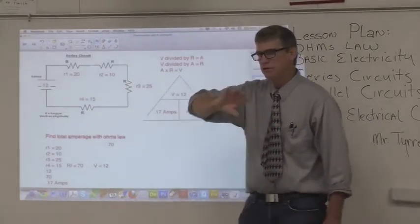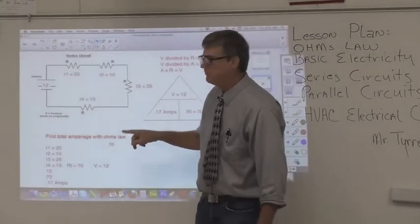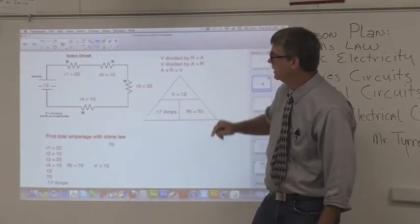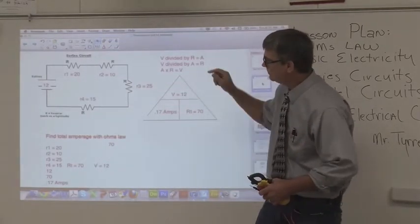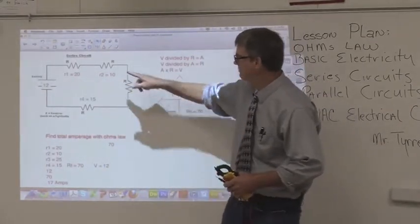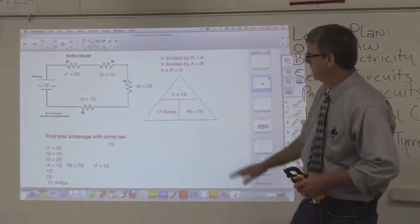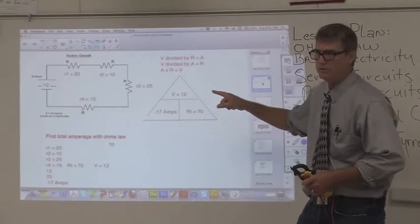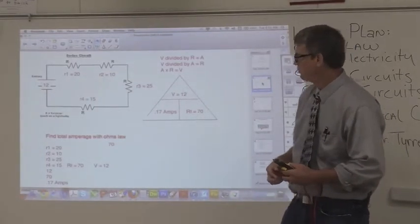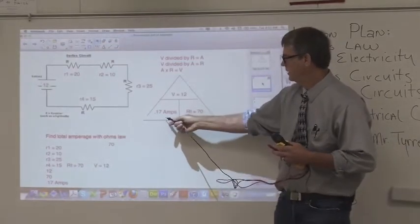In series, you can add all those resistors together and find out what the amperage is. We don't know what the current is right now. We can find the current by taking the voltage, which is 12 volts, and dividing that by the 70 ohms of resistance. When you do that, if you divide 12 by 70, you're probably going to get about 1.7 amps. I've already done the math on it.